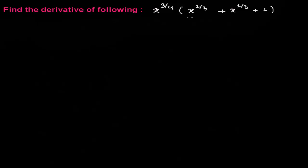Here is our function: x to the power 3/4 times the bracket x to the power 2/3 plus x to the power 1/3 plus 1, and we need to find the derivative of this. We are going to use the power rule only, not the product rule, because one thing is multiplying another one, so we are not going to use the product rule.